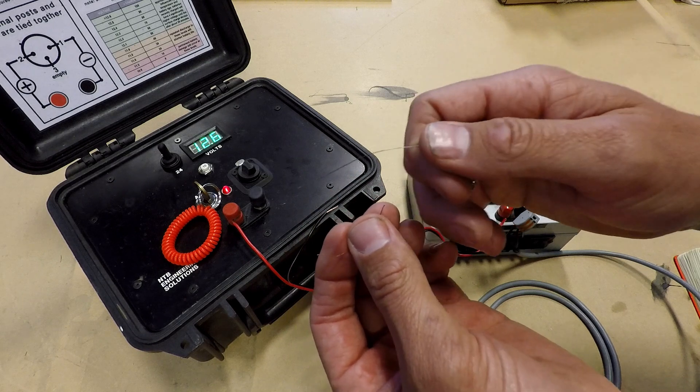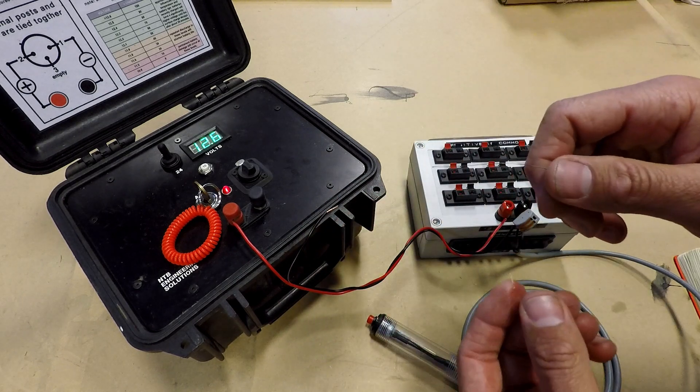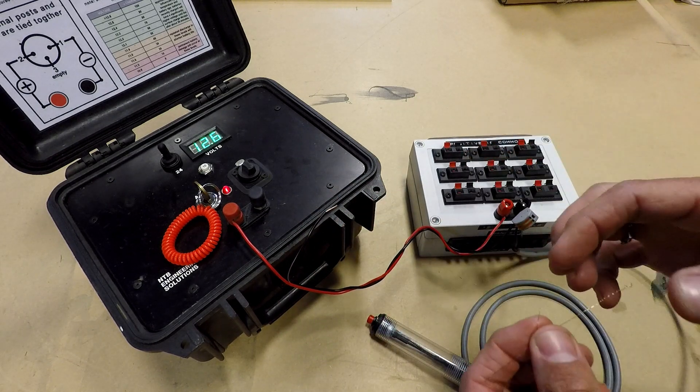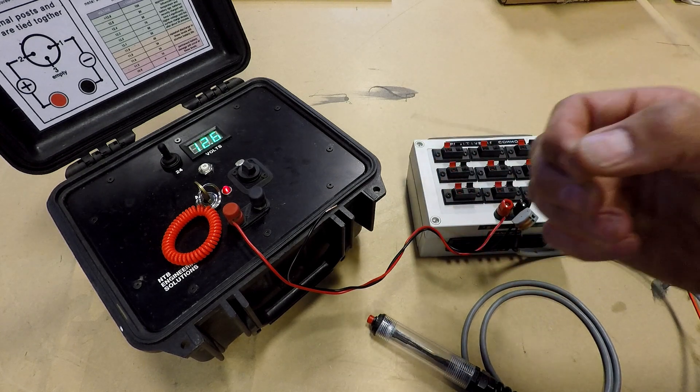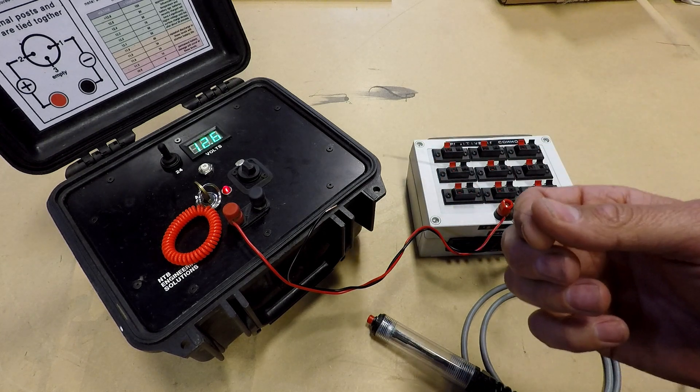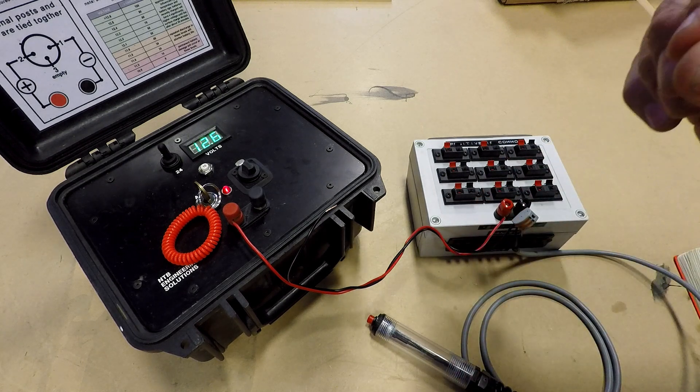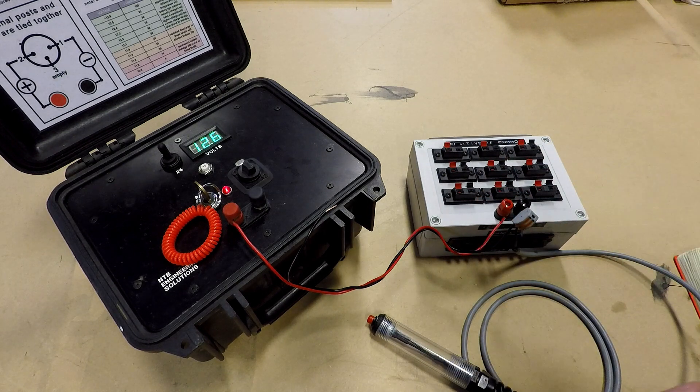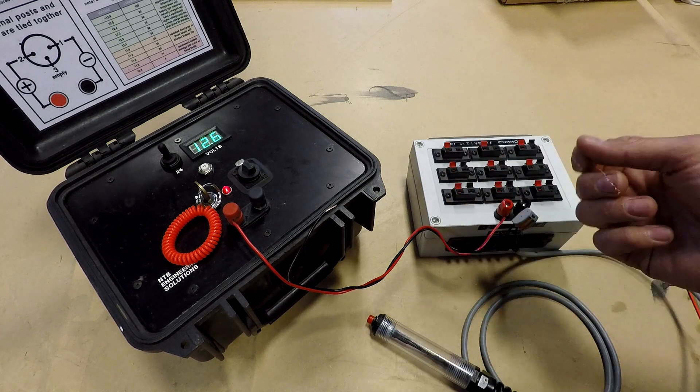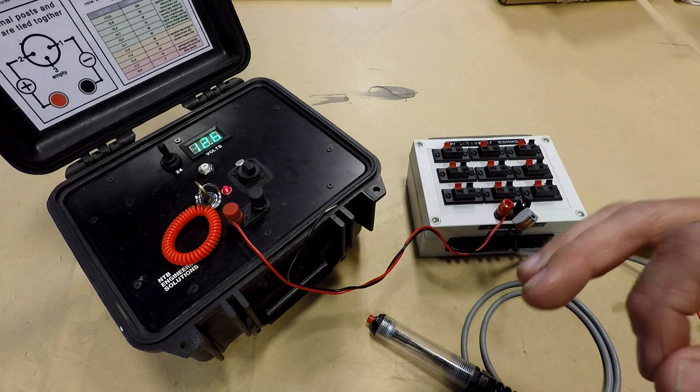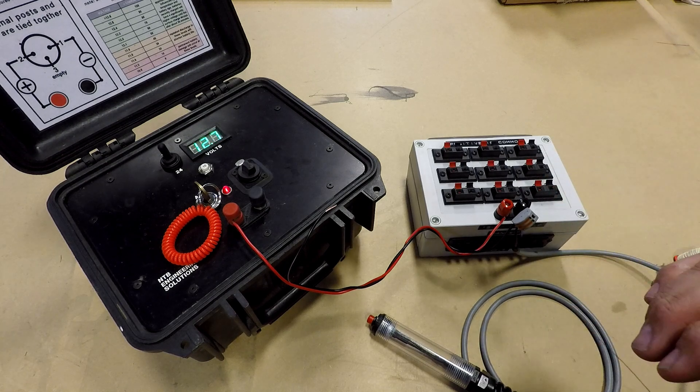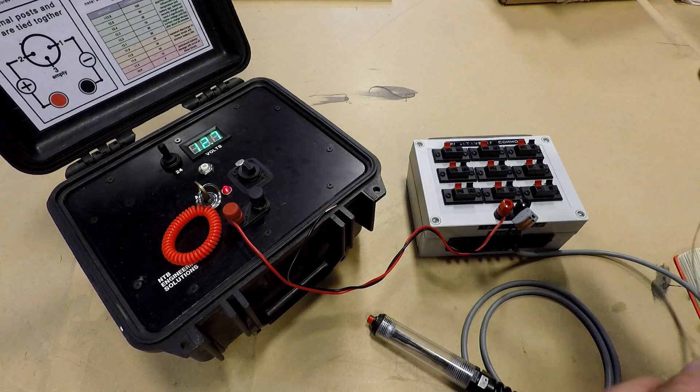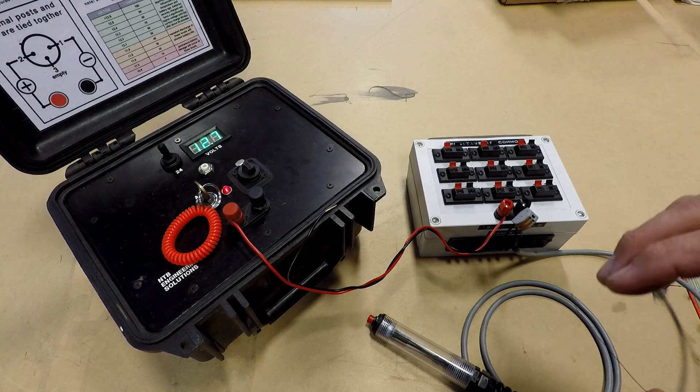So even though this tiny strand of wire passed our continuity test, under load test it failed. Now this is an extreme example. You're probably not going to have a situation like this where your entire circuit is held on by such a tiny connection, but it's an example of the sort of things you should be looking for and the sort of things you can find with a load test. Now let's set this up a little bit differently and show what happens if you've got a high resistance connection within your circuitry, which is much more likely and is less flashy.